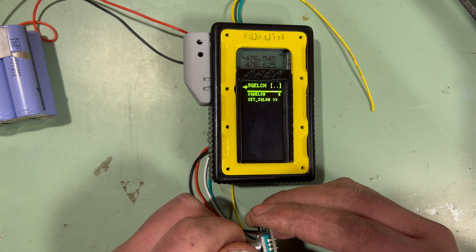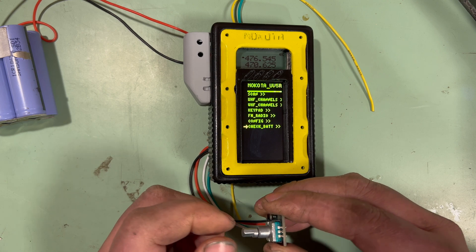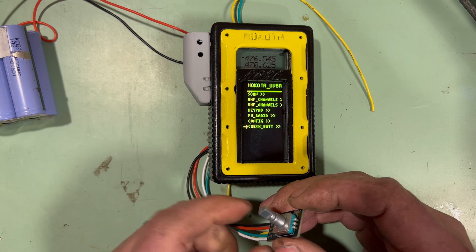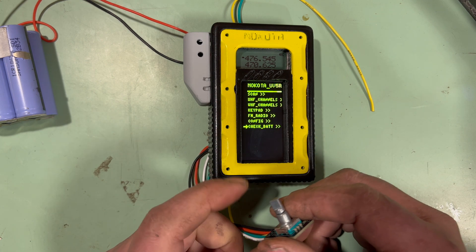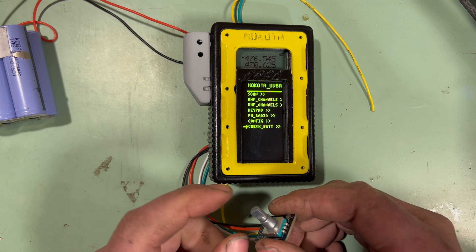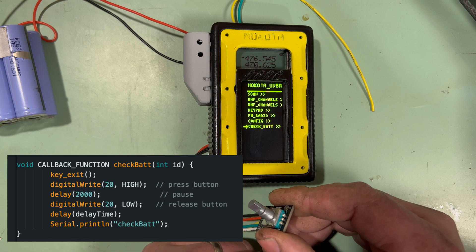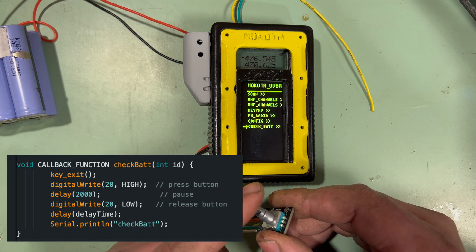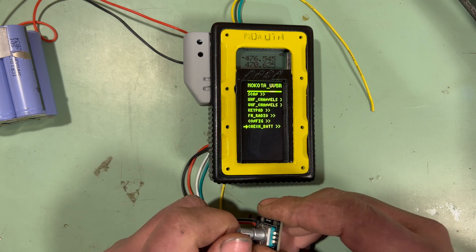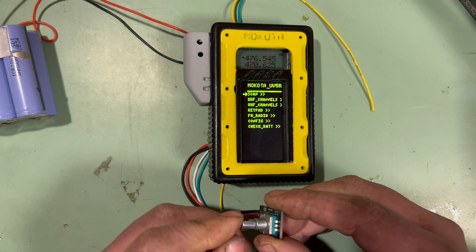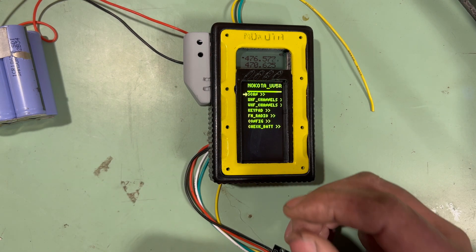The last option is check battery. I didn't really know this until I accidentally did it when setting up this code, but if you hold zero on a Baofeng UV-5R, it displays the battery voltage. So that just holds zero for two seconds or so, which gives you the battery voltage. That's it, that's the whole setup.